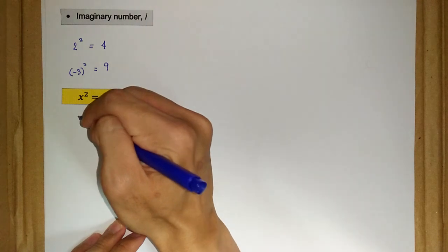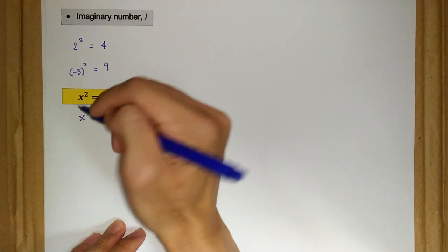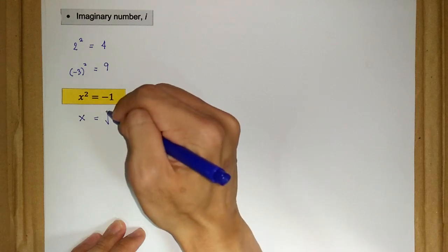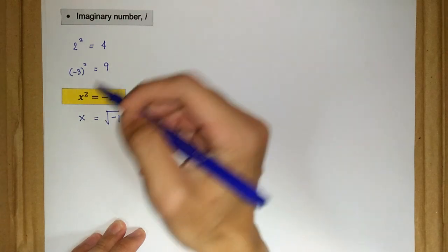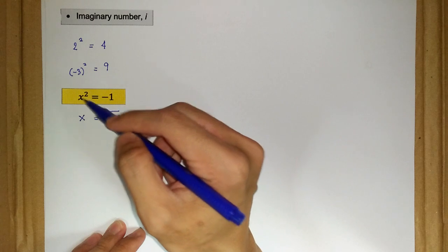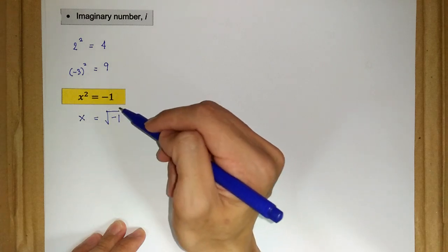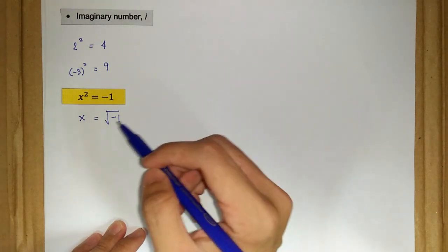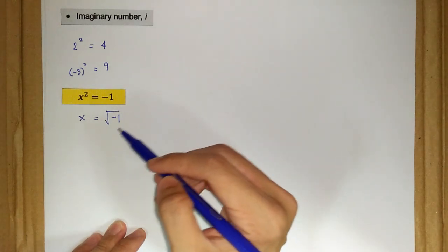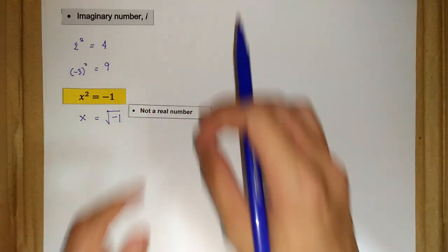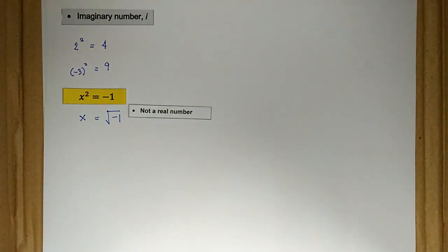Let's say x is equal to the square root of negative 1. Because we bring power 2 to the right hand side, it becomes the power of one half. The square root of negative 1 is not what we call a real number. It's not tangible, and it is an imaginary number.